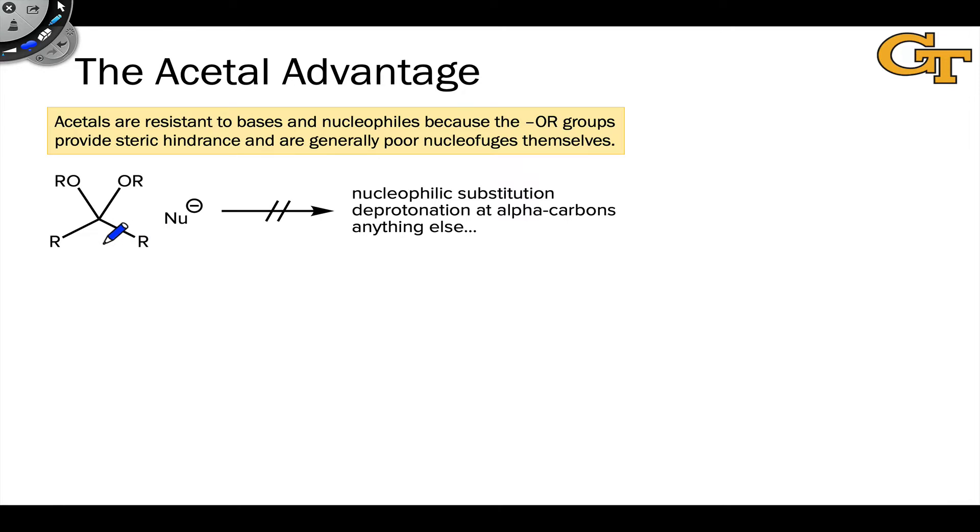The key difference between an acetal and a ketone or aldehyde has to do with the electrophilicity of the carbonyl or the acetal carbon. In an acetal, this carbon is connected by single bonds to two alkoxy groups, and each of these individually is a poor nucleophile or poor leaving group, for the same reason that hydroxide is a poor leaving group.